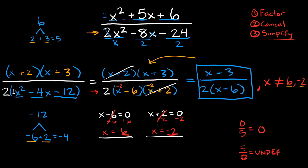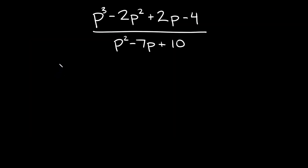Let's try one last example: p cubed minus 2p squared plus 2p minus 4 over p squared minus 7p plus 10. Again, the first thing is to factor the top and bottom individually. Starting with the top — is there anything we can pull out from all four terms? No, there's nothing they all have in common. Since we have four terms, one of the easier ways to factor this is to factor by grouping.